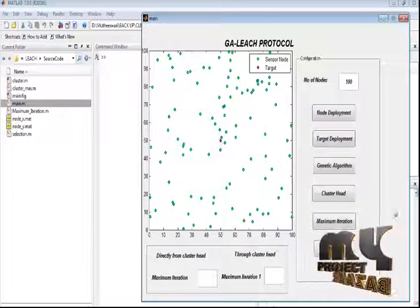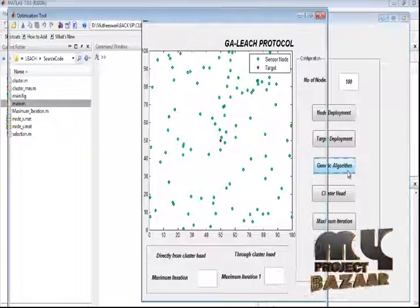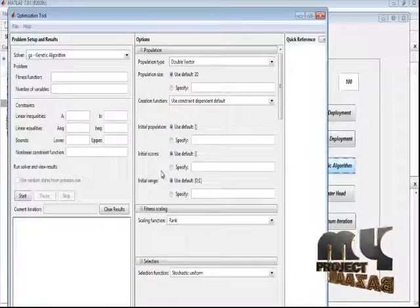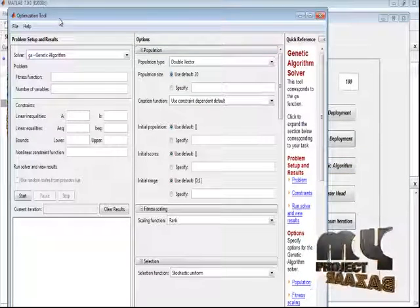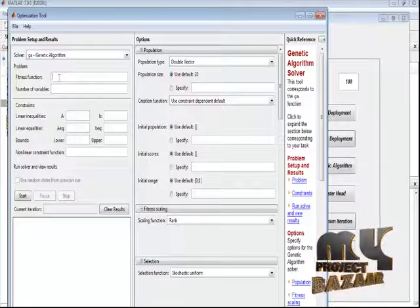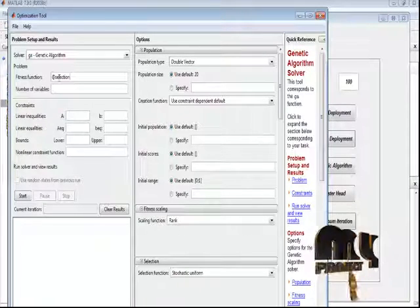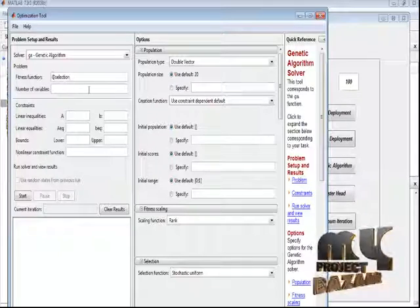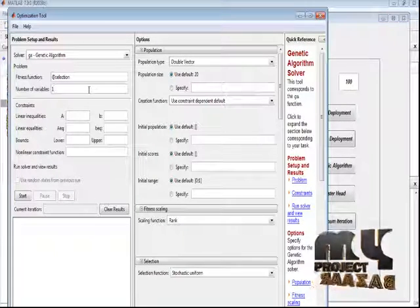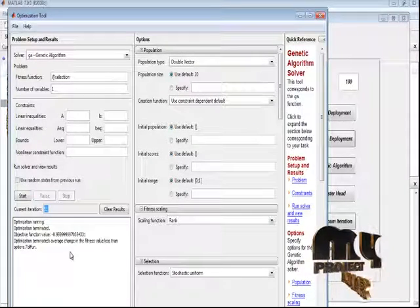By pressing the genetic algorithm, we perform the genetic algorithm simulation process. This is the simulation tool for the genetic algorithm. Here we need to enter the fitness function. Here I use the fitness function in the name of selection, and the number of variables used in the fitness function is 1. Now by pressing the start button, we get the optimized value.